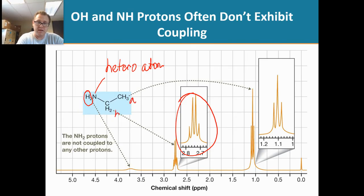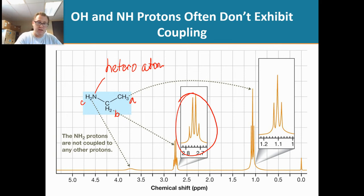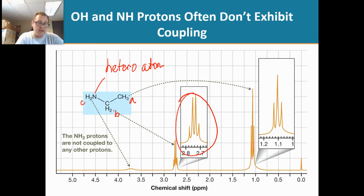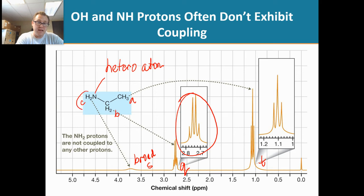So Hb does not couple with Hc. Remember: Ha, Hb, and Hc — Hb does not couple with hydrogens on heteroatoms. And what do we notice about Hc? You see how that's just a broad signal — we call that a broad singlet. You wouldn't just label it as 's' for singlet; you would actually write it out as 'broad singlet.' This one would be a quartet and that would be a triplet.